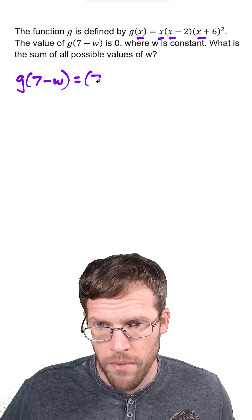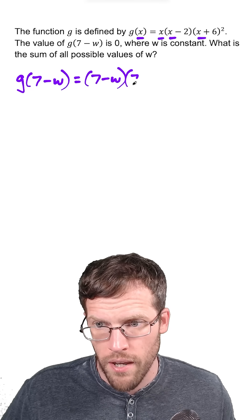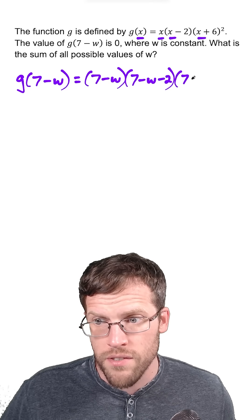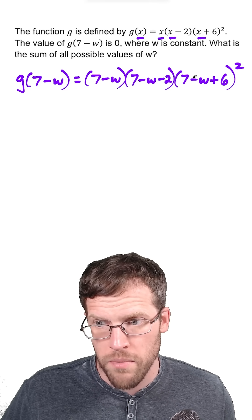So this equals, we have 7 minus W, and then instead of X minus 2, we're going to have 7 minus W minus 2. Instead of X plus 6, we're going to have 7 minus W plus 6, and that last quantity is being squared.